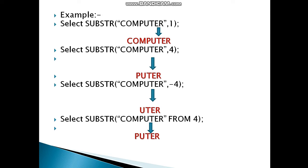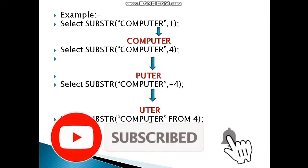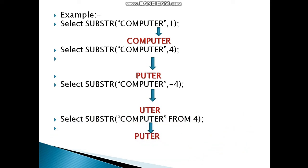In the next example, the string is 'computer' and the start position is minus four. Minus four means we are following reverse indexing, which goes right to left. Counting from the right: minus one, minus two, minus three, minus four — the letter 'u' is at minus four position. So we start counting from 'u': u, t, e, r, giving an output of 'u-t-e-r'.